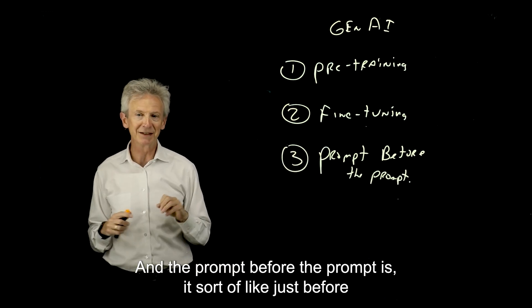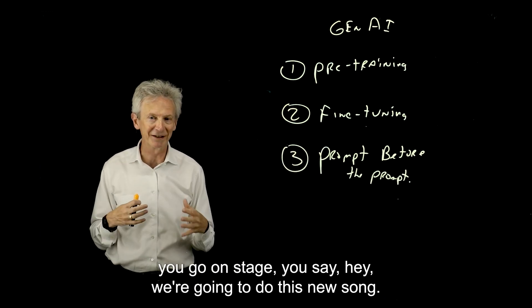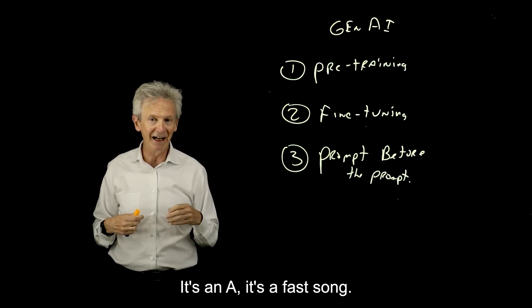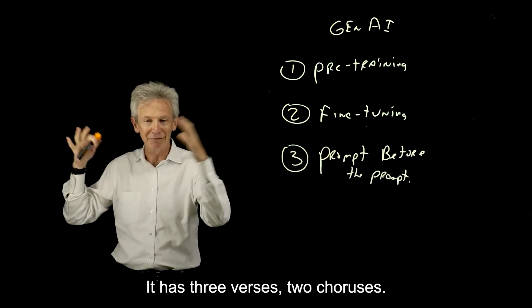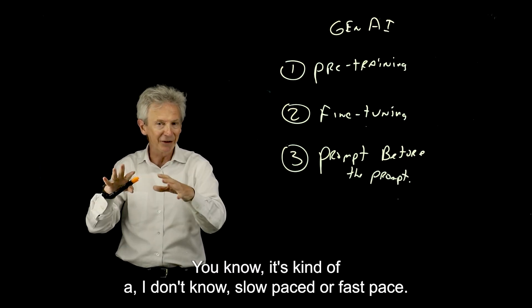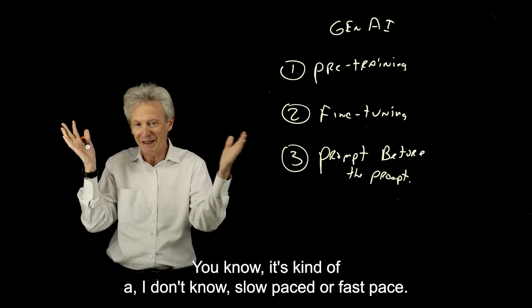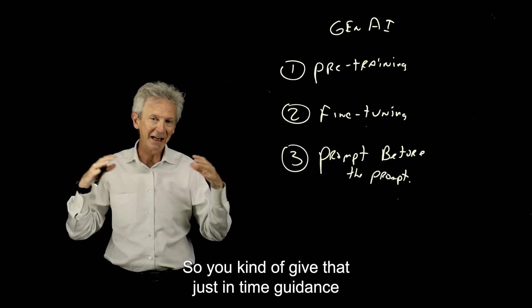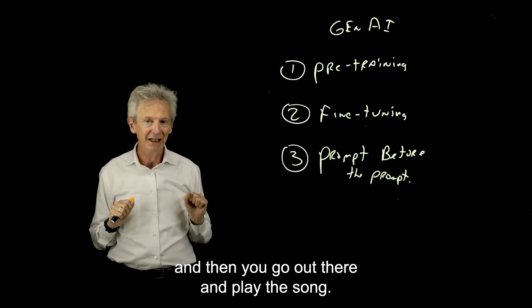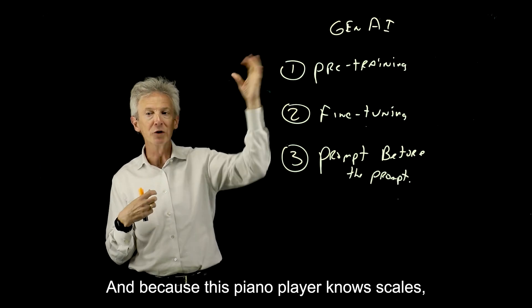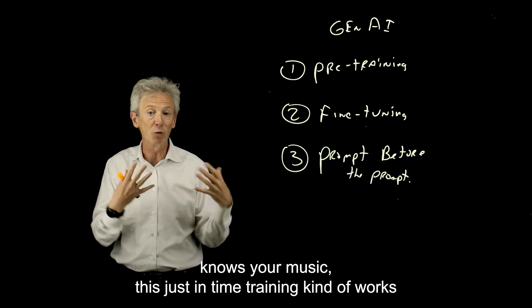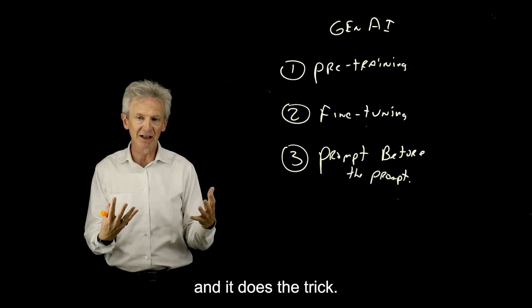And the prompt before the prompt is sort of like just before you go on stage, you say, hey, we're going to do this new song. It's an A. It's a fast song. It has three verses, two choruses. There's a solo for you in the middle. So you kind of give that just-in-time guidance and then you go out there and play the song. And because this piano player knows scales, knows your music, this just-in-time training kind of works and does the trick.